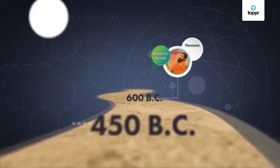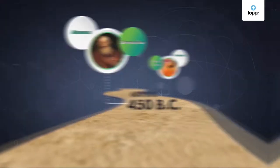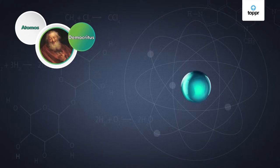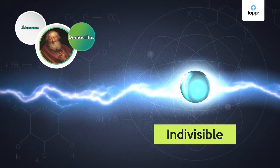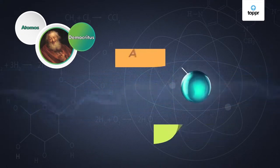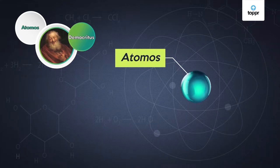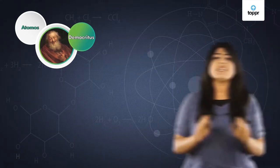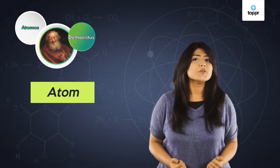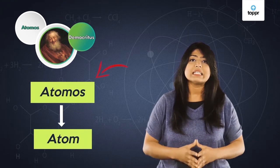A few hundred years later, the Greek philosopher Democritus proposed a similar idea of an indivisible particle. He called it atomus, which means not cuttable. In fact, the term atom that we use today comes from the Greek term.